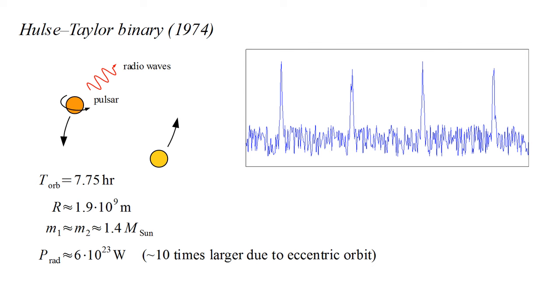Plugging these parameters into our formula for radiated gravitational wave power, we find a value of six times ten to the twenty-three watts. Actually, the objects are in highly elliptical and not circular orbits. Correcting for this gives an estimated power about ten times larger. This is on the order of two percent of the electromagnetic power radiated by our Sun, a significant amount that should have an observable effect on the orbital period.